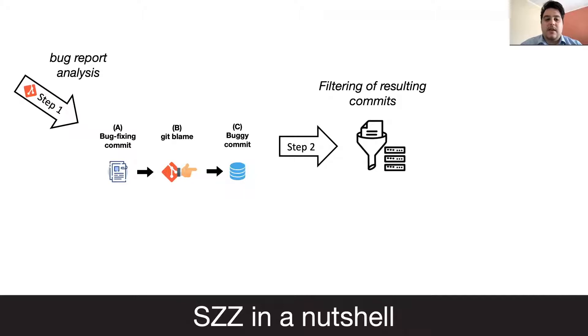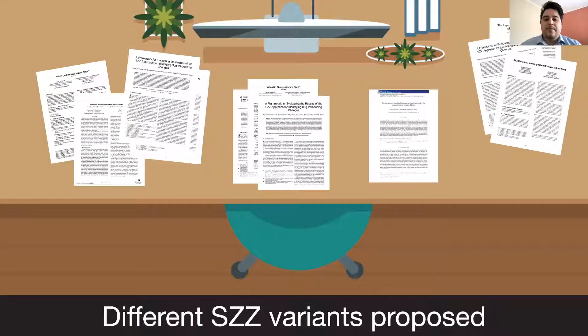Next, a filter on the resulting commits is applied, and at the end, a set of bug-inducing commits is obtained. There are several variants of SZZ proposed to improve the detection of commits that introduce defects, and also to evaluate the effectiveness of the approach.